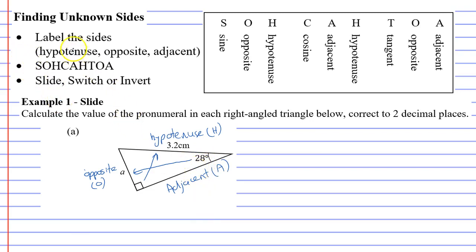After we've labeled our sides, we need to look at our sides and go, well, our hypotenuse is 3.2, our opposite is the letter A, and the adjacent, there's no number or letter there, so we're going to cross it off. We're not going to use it. We're only going to use hypotenuse and opposite.